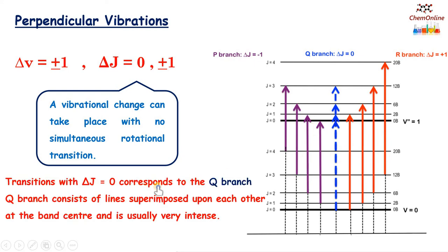Transitions with delta j equal to 0 correspond to the Q branch, which consists of lines superimposed upon each other at the band center and is usually very intense. So for linear molecules: parallel vibrations give a spectrum similar to that of a diatomic molecule with only P and R branches, while perpendicular vibrations have the additional selection rule delta j equals 0, giving P, Q, and R branches.